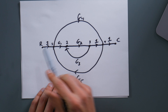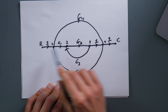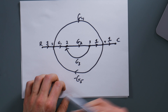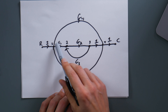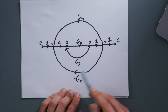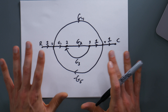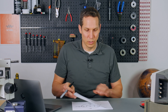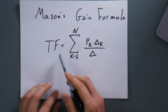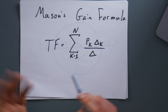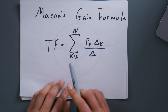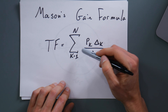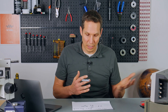A loop is any path where you start at one node and finish at the same node. That is the requirement for a loop: start and stop at the same node. Non-touching loops are also very important — that is when you have a loop that starts and ends at one node, and it is completely different from another loop that starts and ends at the same node, and they don't share any of the same nodes. Finally, the path gain is the gain value — G or H, or in some cases unity — written alongside each branch.